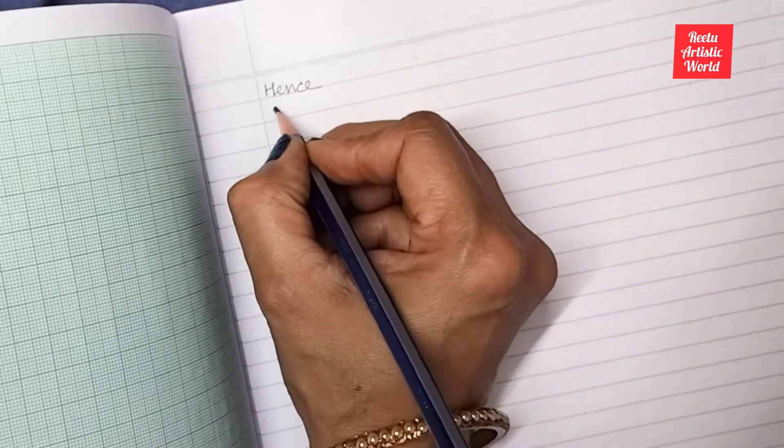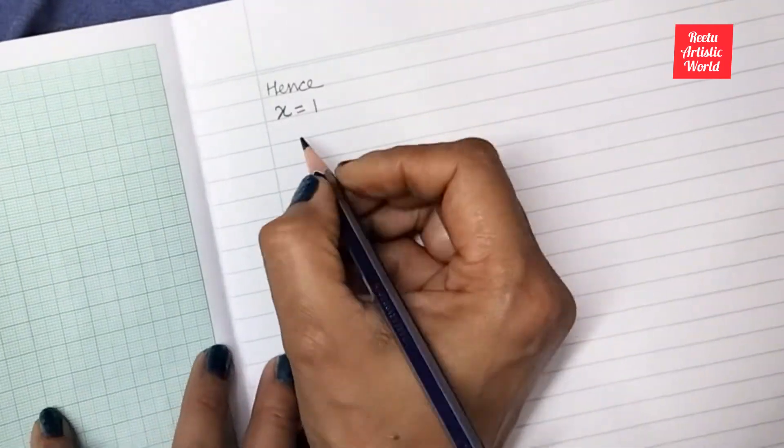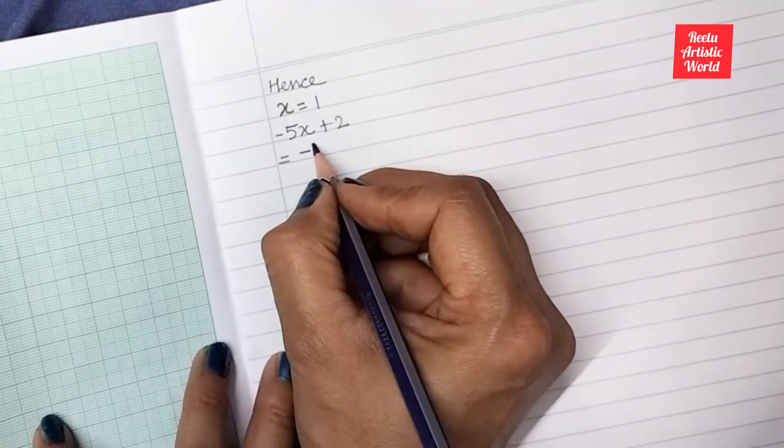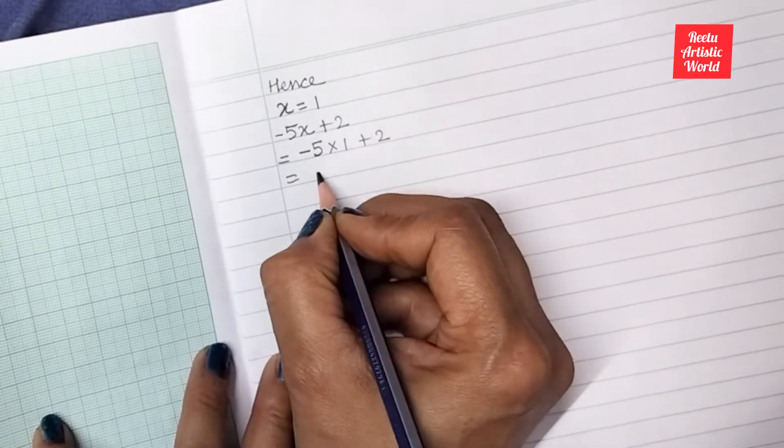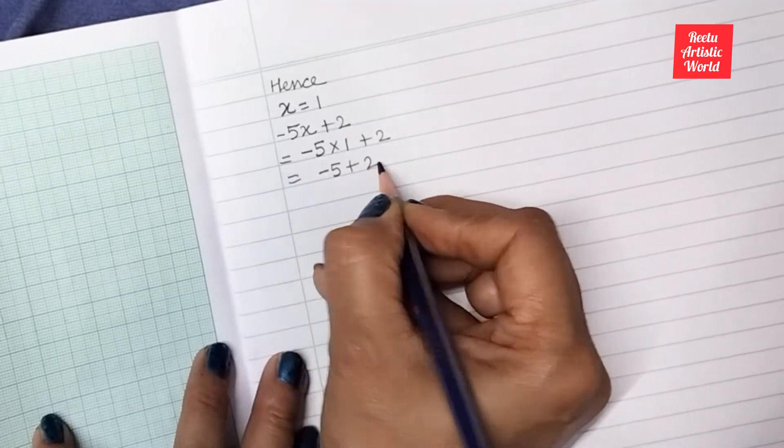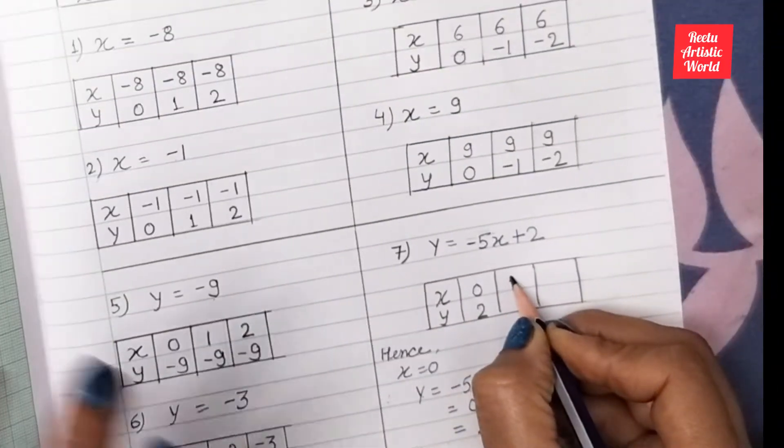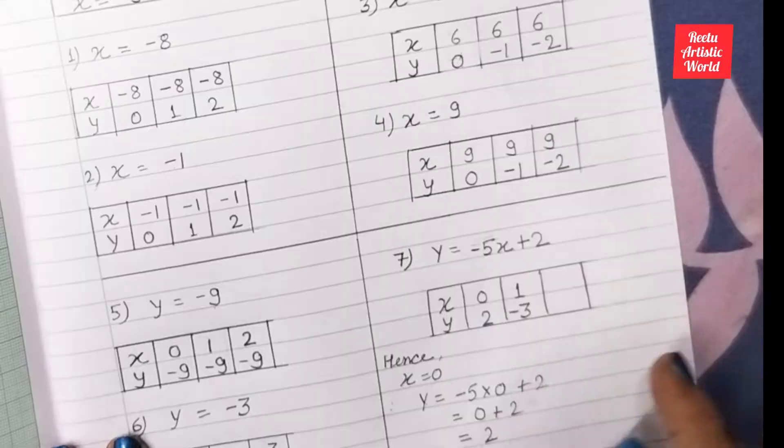Again I assume x is equal to 1, then minus 5 into x plus 2 is equal to minus 5 plus 2 is equal to minus 3. So when x is equal to 1, then y is equal to minus 3.